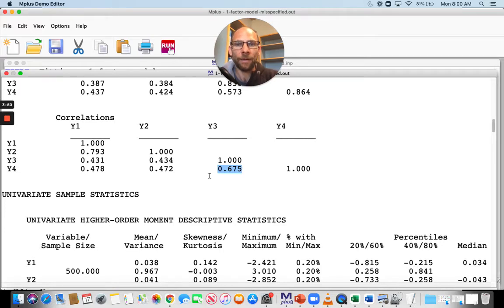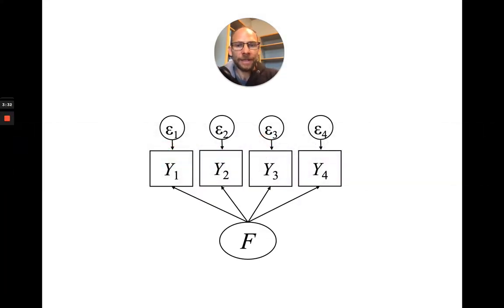The correlations between Y1 and Y2 and Y3 and Y4 are substantially lower. So this model underestimates the higher relationships between Y3 and Y4 or between Y1 and Y2 because it has only a single factor. This means that we have a residual association here, for example, between Y3 and Y4 that is not accounted for by the model.